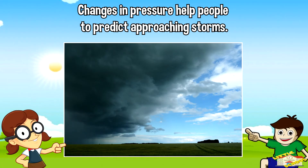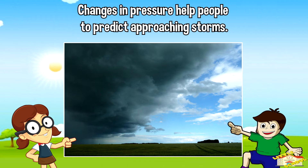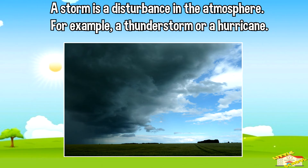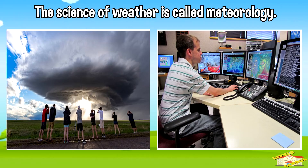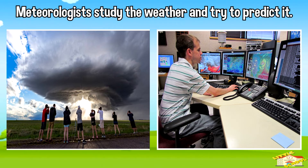Changes in pressure help people to predict approaching storms. A storm is a disturbance in the atmosphere — for example, a thunderstorm or a hurricane. The science of weather is called meteorology. Meteorologists study the weather and try to predict it.